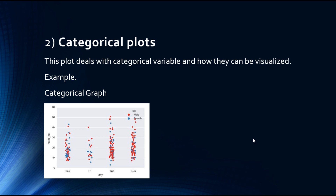First of all, you can see this is an example of a categorical graph. There are multiple categories like Thursday, Friday, Saturday, Sunday on the x-axis, and here on the y-axis we have numerical data like 0, 10, 20, 30.